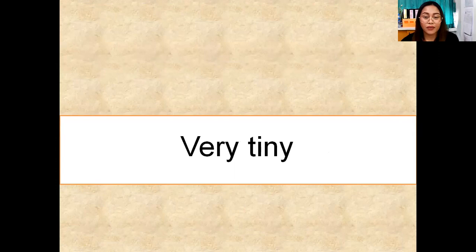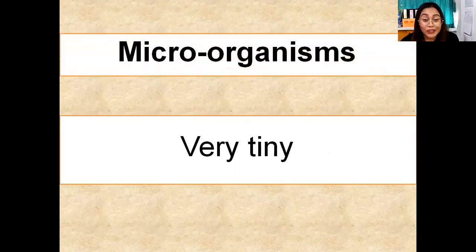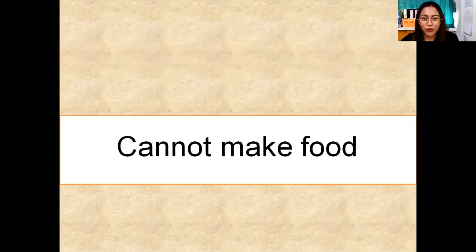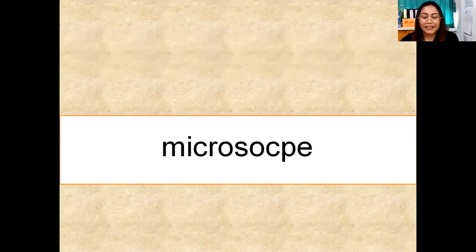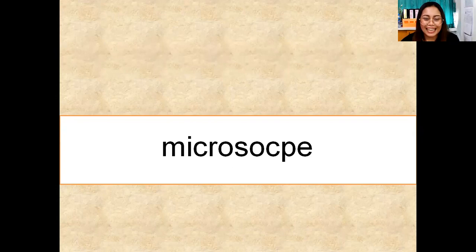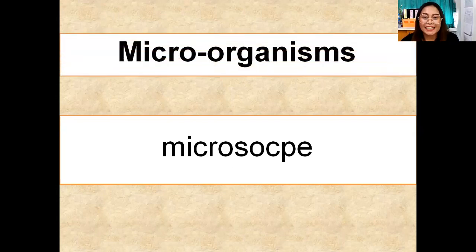Next: very tiny, you cannot see it using your naked eye because it is very, very small. Microorganisms — correct! Next: no leaf or leaves. What do you think is the answer? Fungi — correct! Next: you need a microscope, a machine, an object, so you can see those very tiny organisms. What do you think is the answer? Microorganisms — correct!